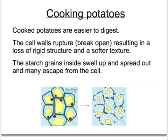When potatoes are cooked, they become softer and easier to digest. Potatoes contain a great deal of starch, found in starch grains within each individual cell. As the potatoes are cooked in warm water, the starch grains start to swell up and become so large that they no longer fit easily within the cell. At the same time, the cell walls, which are made of cellulose, start to weaken and break open. These two things combined cause the cell walls to break, the starch grains to escape, and the whole potato to have a much softer structure and texture.